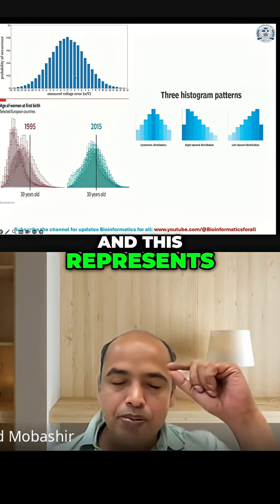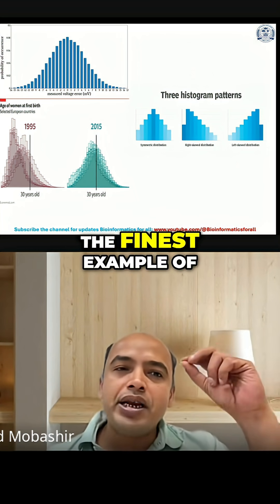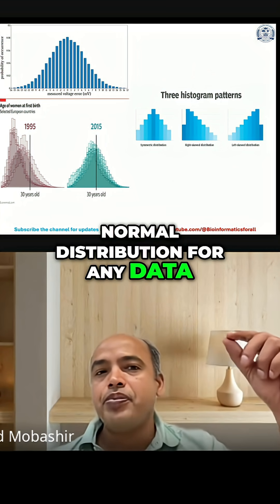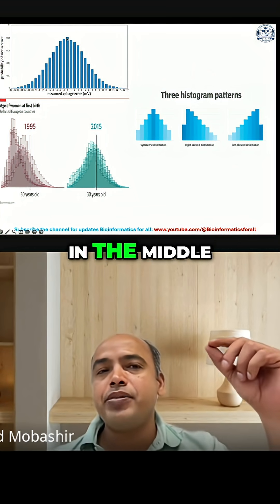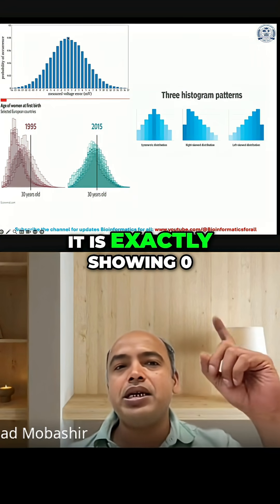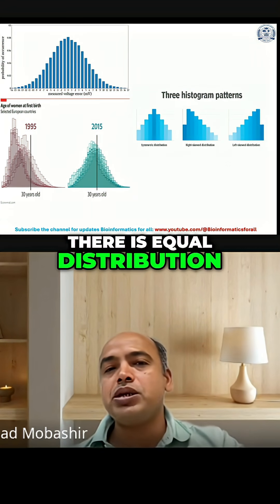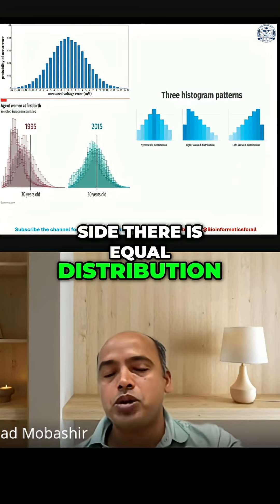And this represents the finest example of normal distribution for any data. And this is what you can see in the middle - it is exactly showing zero, while on the left there is equal distribution, and on the right side there is equal distribution.